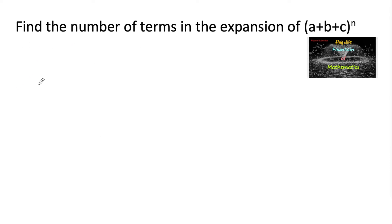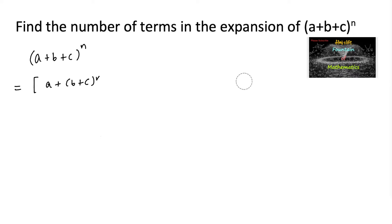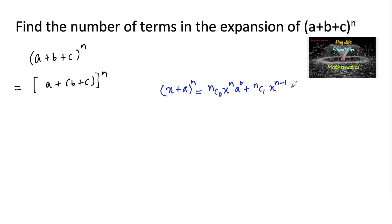Find the number of terms in the expansion of (a + b + c) whole to the power n. Let us write this as the binomial expansion form. We know that the expansion of (x + a) whole power n is: nc0 x^n a^0 + nc1 x^(n-1) a^1 + nc2 x^(n-2) a^2 and so on, with the last term being ncn a^n.